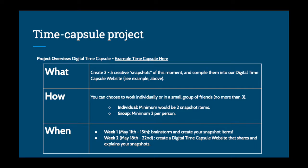Ideally, this first week we want it to be a time for you to brainstorm and think about what snapshot items you want to do, and possibly start working on them as well. That way, by week two — which will be May 18th to the 22nd — you will have created the digital time capsule, built a website out of it, and be able to share all of the snapshots that you have created.